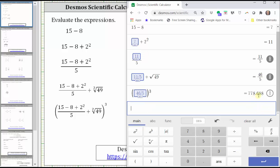We have 778.688 as a decimal, or as a fraction, 97,336 over 125.